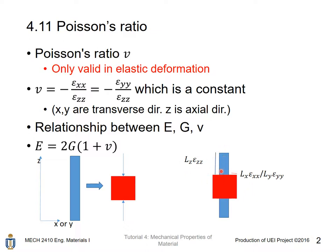For this elongated part, it is equal to L — L is the original axial direction length — times the strain value, which equals the elongation. The red portion is the elongation along the transverse direction, not the axial direction. It can be in the X coordinate or in the Y coordinate, and it is equal to the X direction original length times the X direction strain under the loading, or Y in terms of Y.